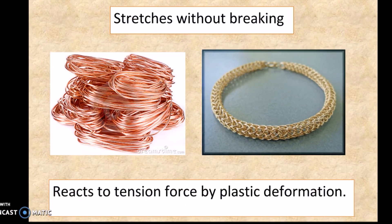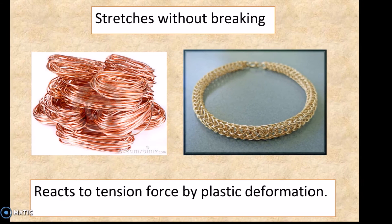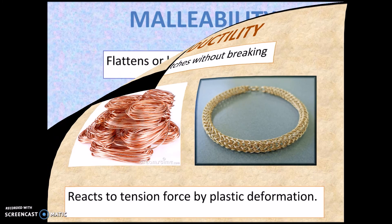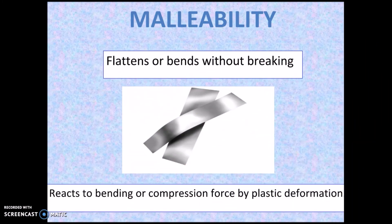If you like jewelry, you're probably wearing materials that have the mechanical property of ductility. Ductility means something stretching without breaking. You have an example here of long copper wires that can be stretched into whatever shape you want them to be, and here's an example of a bracelet. Ductile materials react to tension force by plastic deformation — they are permanently changed in their shape, but still in one piece.